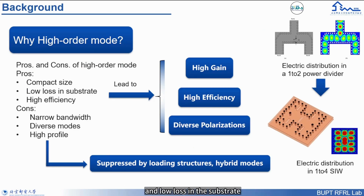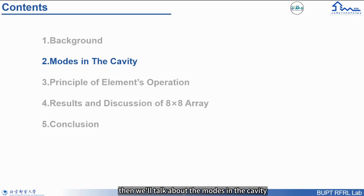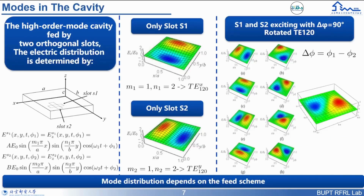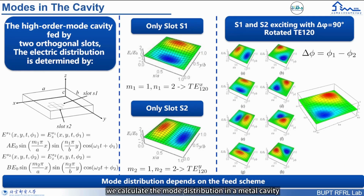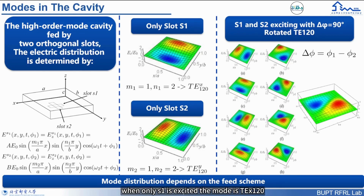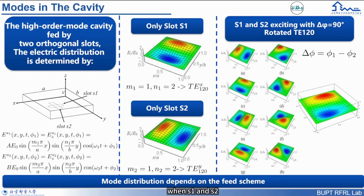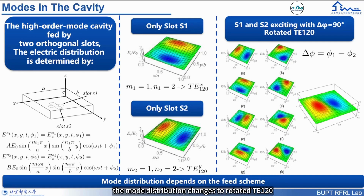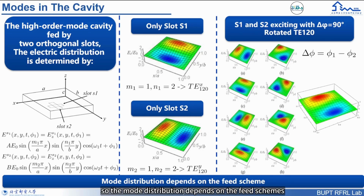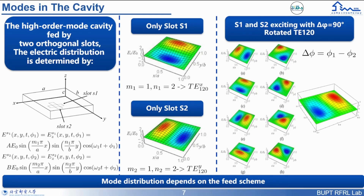We'll talk about the modes in the cavity. The modes in a metal cavity are various. In this paper we calculate the mode distribution in a metal cavity fed by two orthogonal slots S1 and S2. When only S1 is excited the mode is TE-X120; when S2 is excited individually the mode is also TE-X120. When S1 and S2 are excited with a phase difference of 90 degrees, the mode distribution changes to rotated TE-X120, as shown on the left of this slide. So the mode distribution depends on the feed schemes.